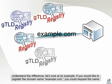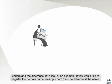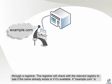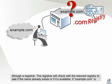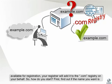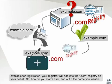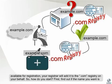To understand the difference, let's look at an example. If you'd like to register the domain name example.com, you could request the name through a registrar. The registrar will check with a relevant registry to see if the name already exists or if it's available. If example.com is available for registration, your registrar will add it to the .com registry on your behalf.